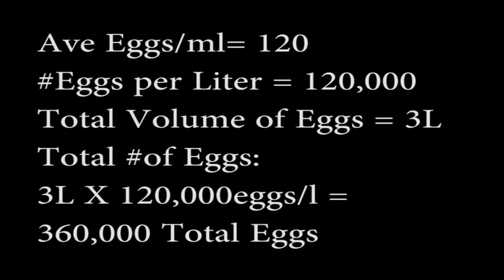For example, say we counted an average of 120 eggs per milliliter. Multiply this by 1,000 to equal 120,000 eggs per liter. If our total volume of eggs was 3 liters, determined earlier by volumetric displacement, 3 liters multiplied by 120,000 eggs per liter gives us 360,000 total number of eggs in the bell jar.